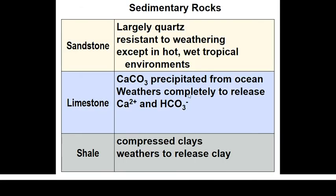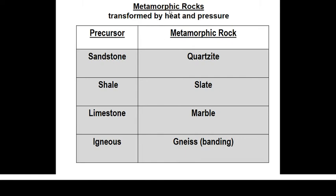Another example of sedimentary rocks is shale — compressed clays that weather to release clay. Shale can also be called a conglomerate or aggregate of clays. The other type of rocks is metamorphic rocks — transformed by heat and pressure. When sandstone undergoes metamorphic processes, it forms quartzite. When shale metamorphs, it forms slate. When limestone metamorphs, it forms marble. When igneous rocks metamorph, they form gneiss. In board exams, a typical question asks what happens when sandstone undergoes metamorphic processes — the answer is quartzite.